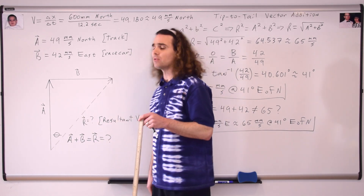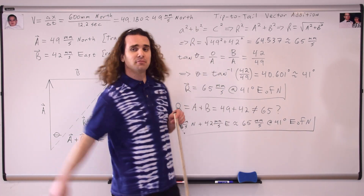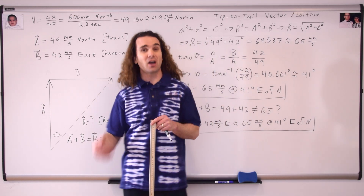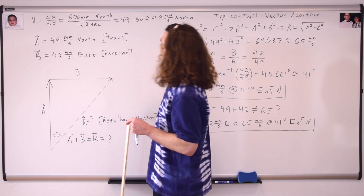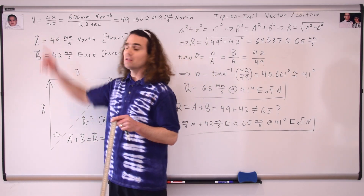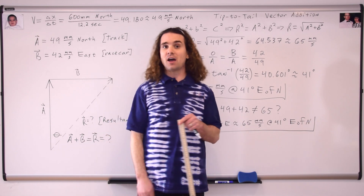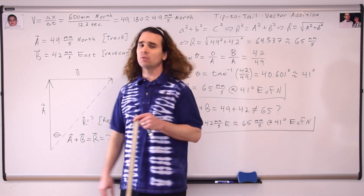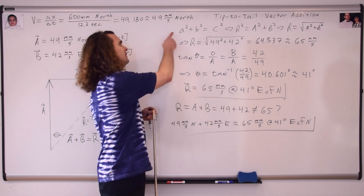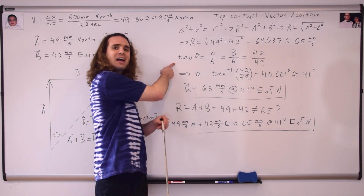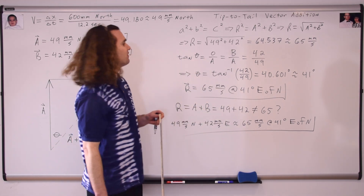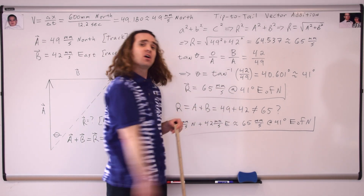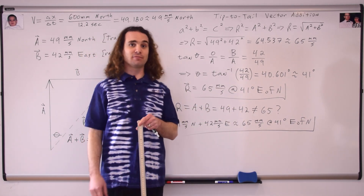Let's do a quick review. We did tip-to-tail vector addition and illustrated it visually on the board using arrows of the correct length, using letters with an arrow over the top to show they are vectors. Because we had a right triangle, we could use the Pythagorean Theorem and SOH-CAH-TOA to figure out both the magnitude and the direction of our resultant velocity vector.